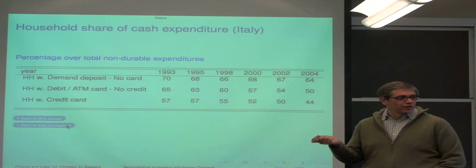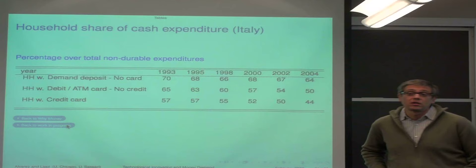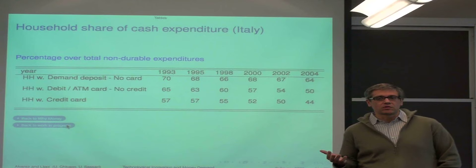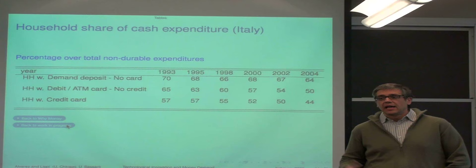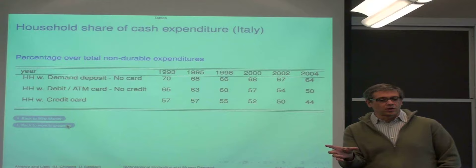Also conceptually, I hope it will be more clear later on, there's kind of two different margins why you may have cash for the purpose of transactions. One margin is that you may conduct some transactions in cash and some in some other way, credit for instance. And another source of money demand is that given that you're going to have so many transactions with cash, there's an issue of how much cash you get on average.